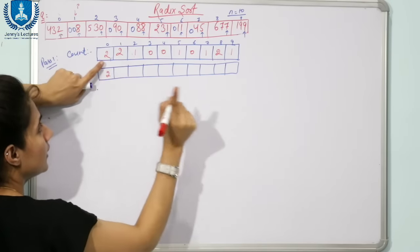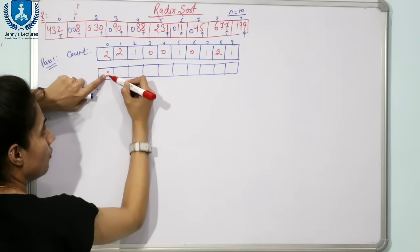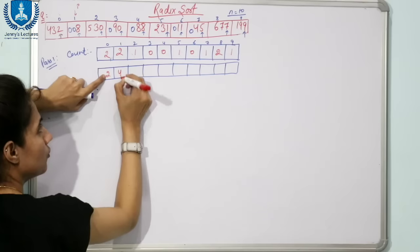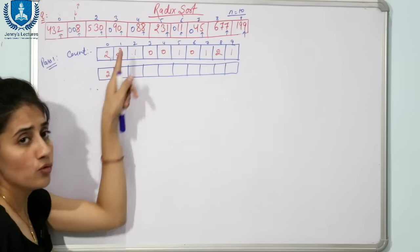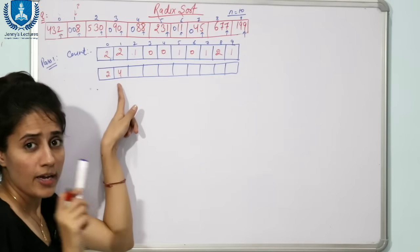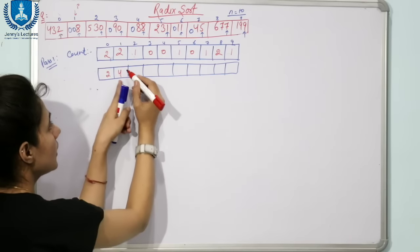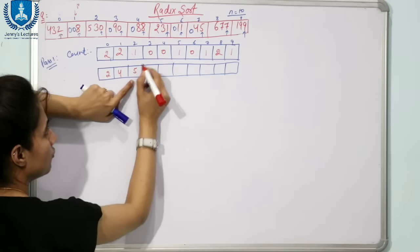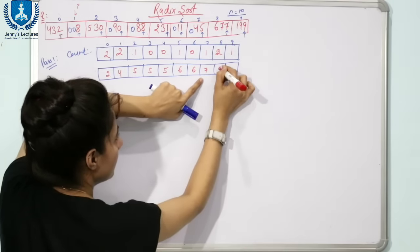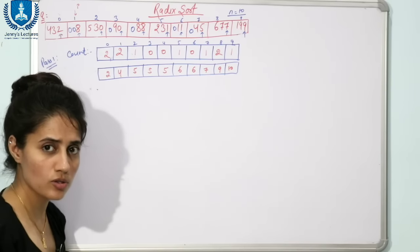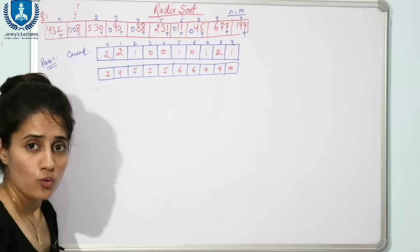Now update the count array so it reflects the actual positions of elements in the sorted array. The first value stays as is. Then: 2 + 2 = 4, then 4 + 1 = 5, 5 + 0 = 5, 5 + 0 = 5, 5 + 1 = 6, 6 + 0 = 6, 6 + 1 = 7, 7 (stays), 9 + 1 = 10. This updated count array gives the actual position of each element.